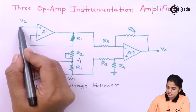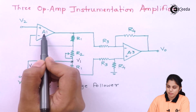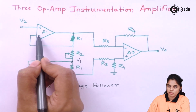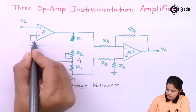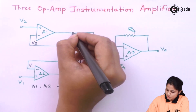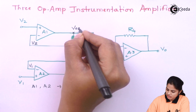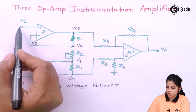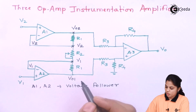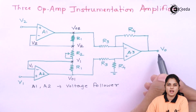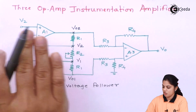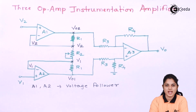Similarly, V2 is the voltage given to operational amplifier A1 at the non-inverting terminal, so by the virtual short concept the inverting terminal will also remain at the same potential, V2. This point is named V2, and the output is named V02, since it is the output of the op-amp where V2 is applied, and V01 is the output where V1 is applied. The third amplifier A3 is a difference amplifier.